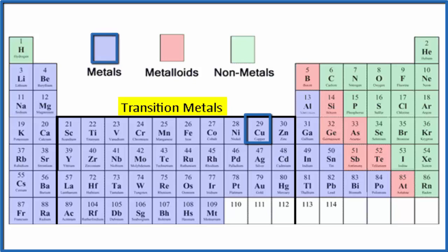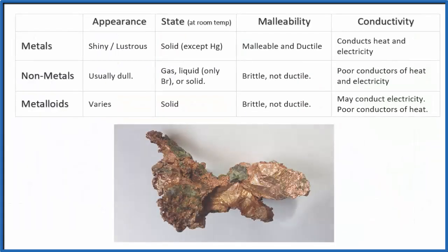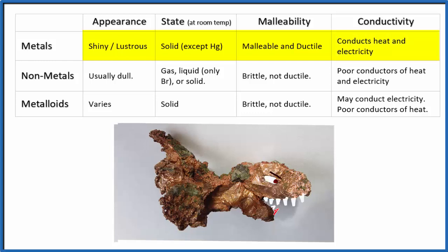We could also look at the physical and chemical properties for metals, non-metals, and metalloids. Copper is shiny, it's a solid, and it can be bent and shaped. It's malleable and ductile. It also conducts heat and electricity very well. Most of the wires in houses are made of copper.